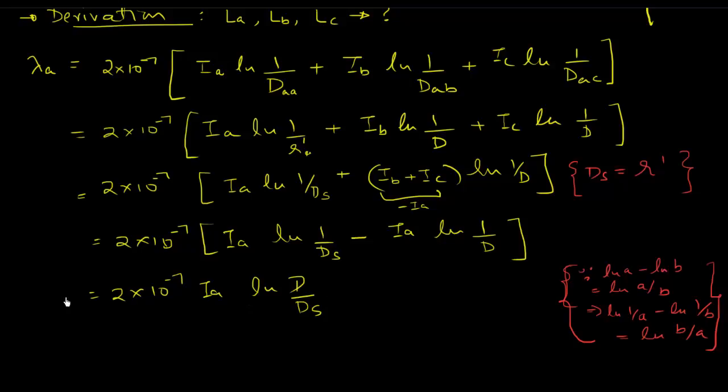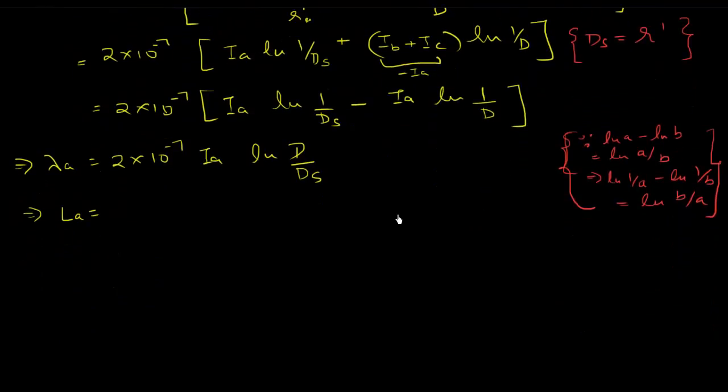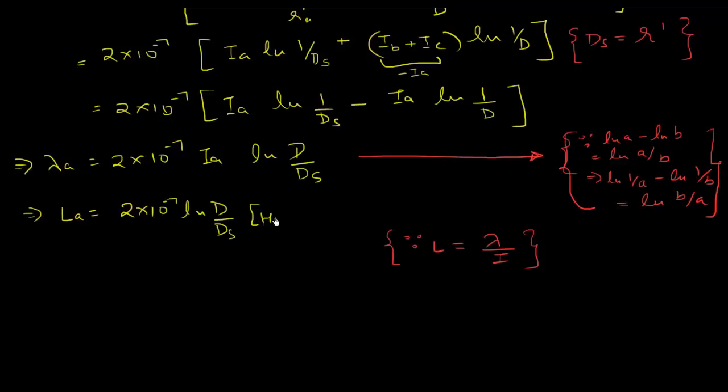So that is our flux linkages for conductor a. We know that this is nothing but - let me also write that here in the brackets - so this follows from here. And we know that inductance is nothing but flux linkages over current. So we're going to use that identity to say La is going to be 2 into 10 to the power minus 7 ln of d over Ds henry per meter, because we're going to divide flux linkages by Ia, and then Ia, Ia get cancelled.